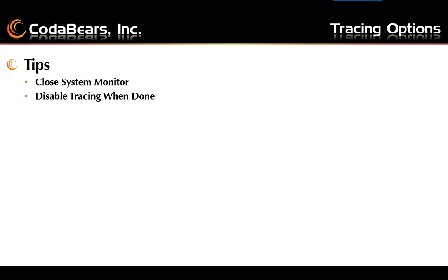Some tips to think about when using tracing options: you should close the system monitor. Closing the system monitor is suggested before you start tracing for a single trace to show business objects and methods; otherwise you include additional calls to the system monitor that are probably not needed. You may want to leave system monitor open if you're doing performance troubleshooting because that may be part of the performance issues. Don't forget to disable tracing when you're done, or you may end up with large log files or numerous log files which then need to be later cleaned up.